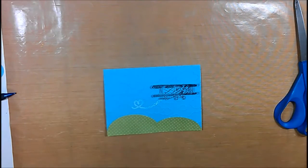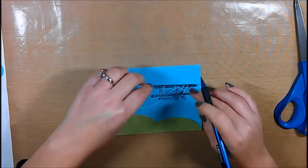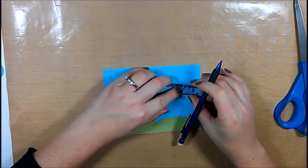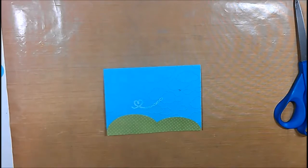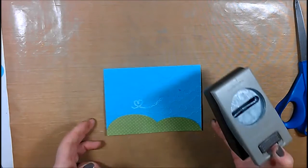I put the plane down on my card where I wanted it to be when the slider was open and then I just used a pencil and I made a little X so that when I cut out the slider panel I knew how far I wanted to go.